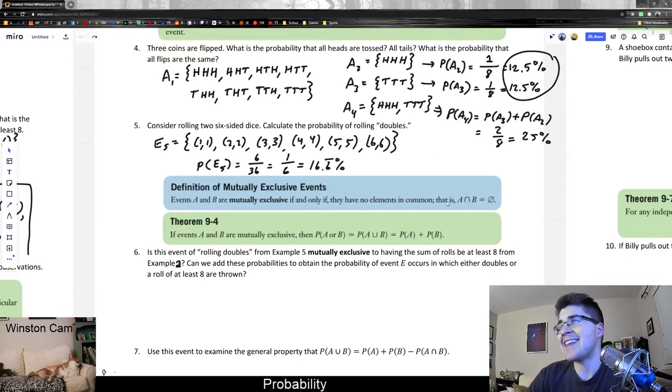But anyways, notice what it says is that A intersect B is equal to the null set. And just to revisit these ideas from chapter two, remember that A intersect B means the common elements of that set. And when it says it's equal to null set, that is saying that basically it has no overlap.